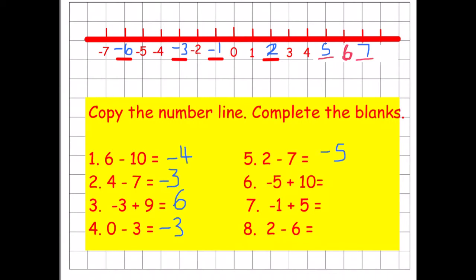Number six: starting on negative five and adding ten. Adding five brings us to zero, and adding another five brings us up to five. Number seven: starting on negative one and adding five. Adding one brings us to zero, and we still need to add four more to make five in total, which brings us up to four.